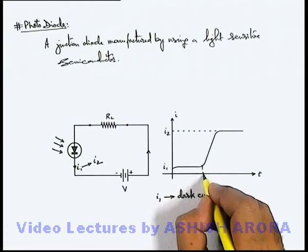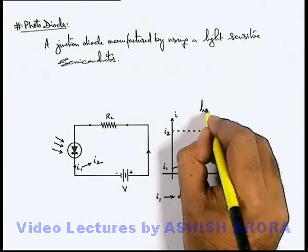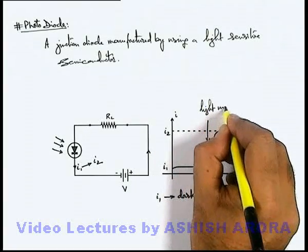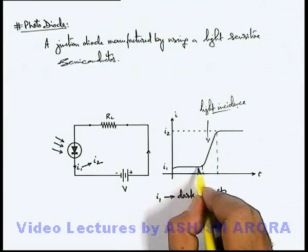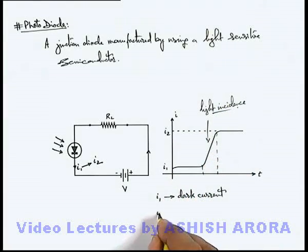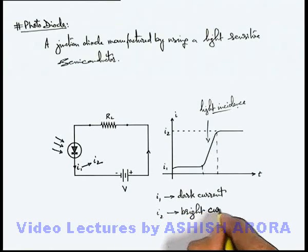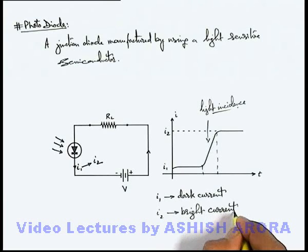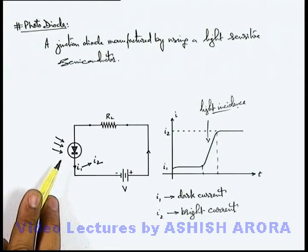So we can say this is the point where light incidence takes place, due to which the current changes from i₁ to i₂. In this situation, i₂ we call the bright current, which is the current that flows when the junction is lit by externally supplied light.